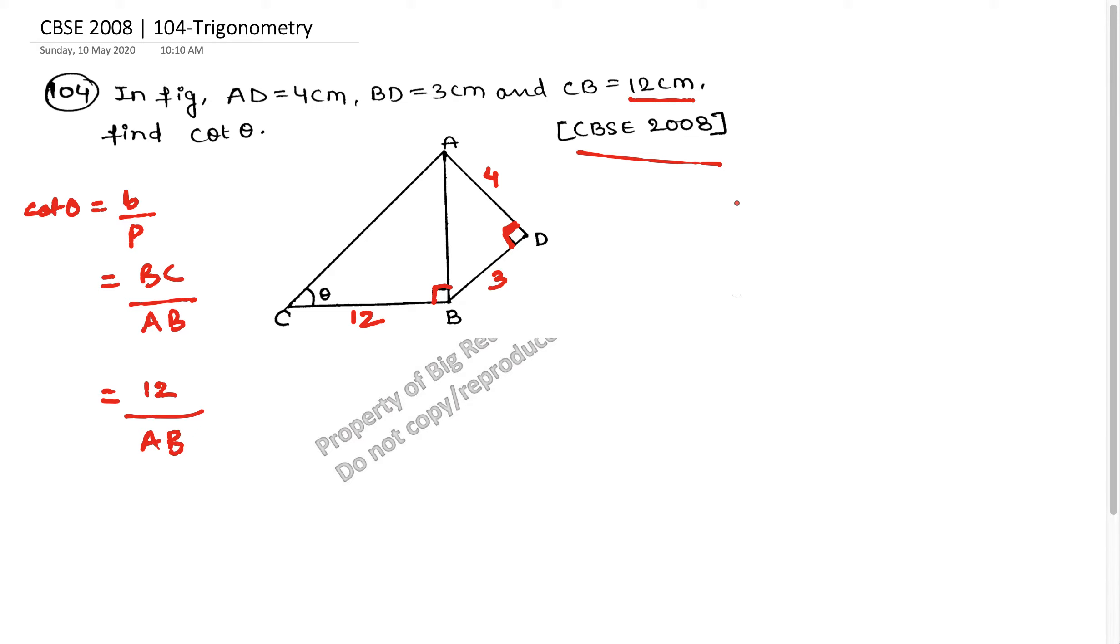But in this triangle, that is, let me solve it here, which is in triangle ABD. In triangle ABD, AB square, because AB is the hypotenuse, is equal to AD square plus BD square.